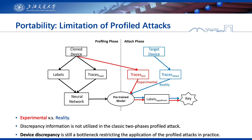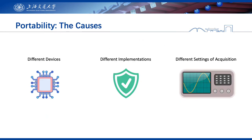Today, device discrepancy is still a bottleneck restricting the application of profiled attacks in practice. We note that an implicit hypothesis of deep learning techniques is that the training data must be independent and identically distributed with the test data. However, when we adopt deep learning in the context of profiled side-channel attacks, this hypothesis is too strong because attack traces are often acquired from a different device without control. In such a context, various settings can easily break the hypothesis and lead to poor performance when we try to attack the target device.